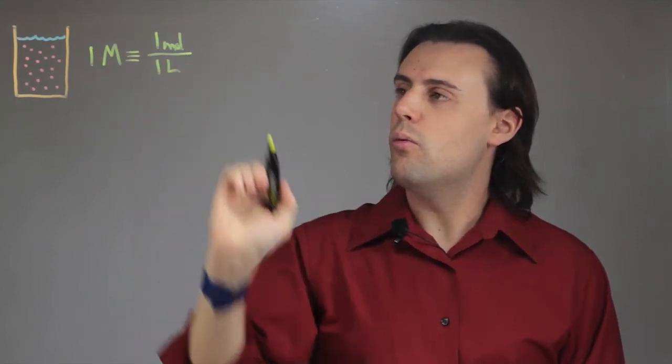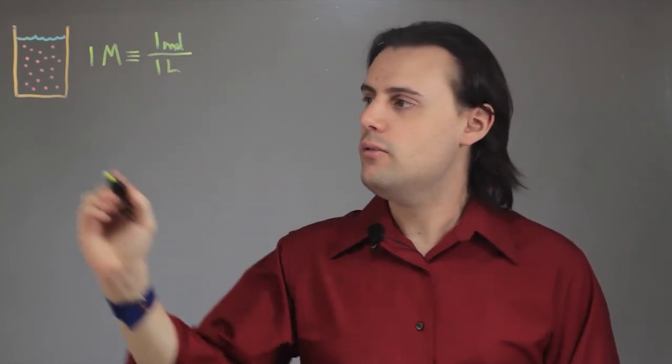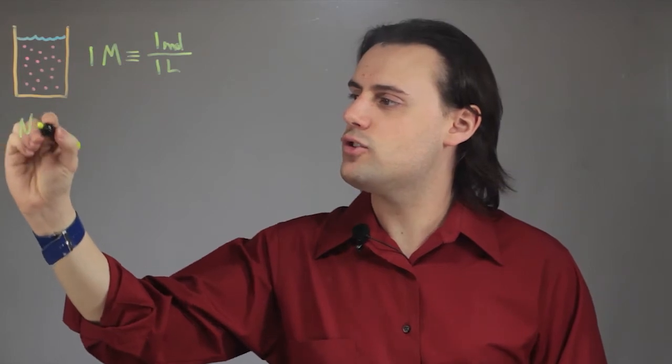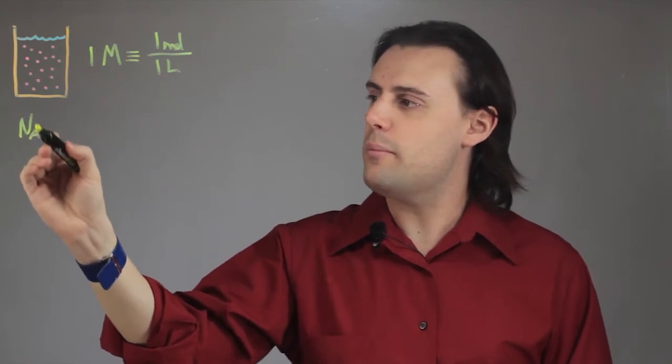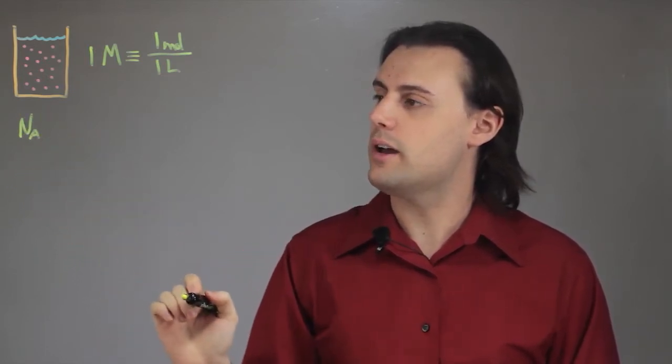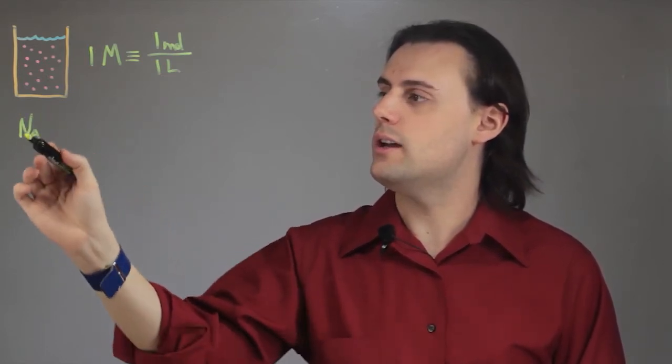So what is a mole? Well, there's something in chemistry known as Avogadro's number, which is typically denoted as capital N sub capital A. A for Avogadro and N for number.